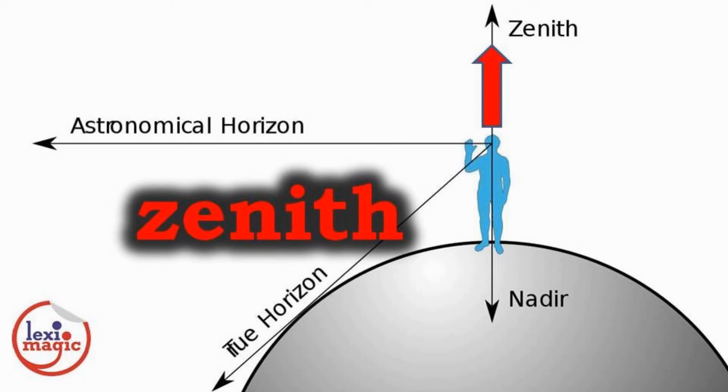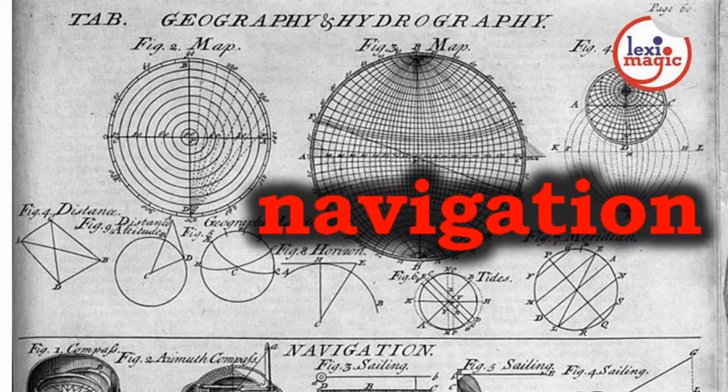Zenith is a point on the celestial sphere located directly above the observer. Navigation refers to celestial navigation or astro-navigation, which involves determining the position of celestial bodies by using the sun, moon and stars as reference points.